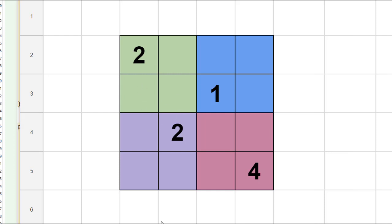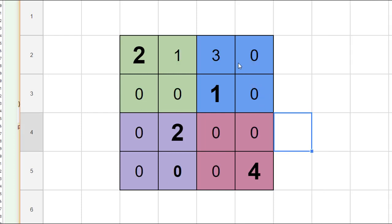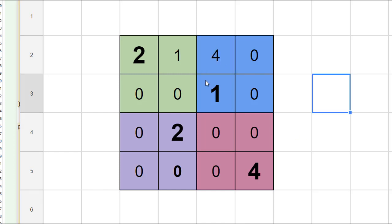By fixed, I mean cells that were already given to us when the board first started — these are the fixed cells. So in this case, the three was the last cell that was not fixed. We're going to go back to that cell and increment it to a four.